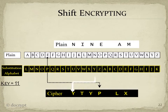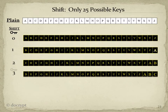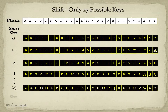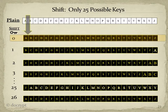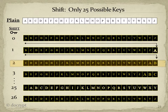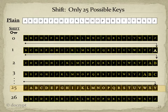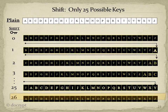And decryption just reverses the path. Shift only has 25 possible keys. A good way to visualize that is to look at the different substitution alphabets as we shift from 0 to 26. Shift 0 doesn't encrypt at all because a encrypts to a, b to b, etc. Shift 1 shifts one letter, a, to the back. Shift 25 shifts a to y over, z becomes the first letter. Shift 26 shifts a to z over, and it's just like shift 0.